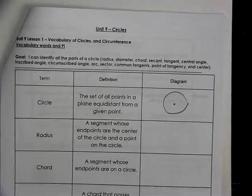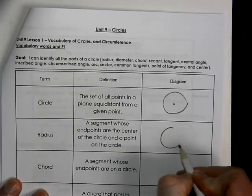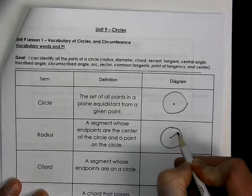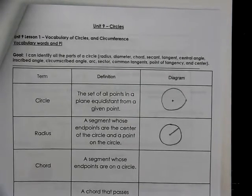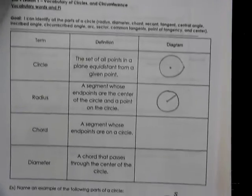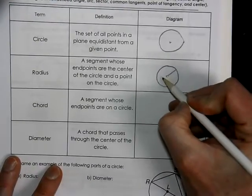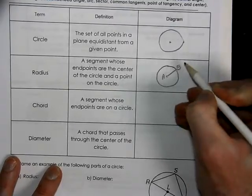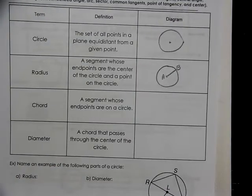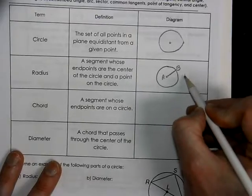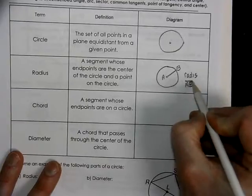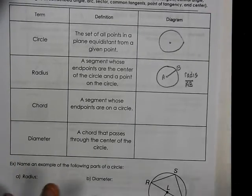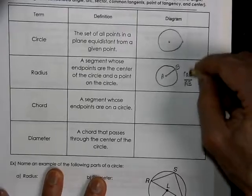A radius. A radius of a circle is a segment that goes from the center to the edge of the circle. We could name that, if we had points on it, as the endpoints of a segment.